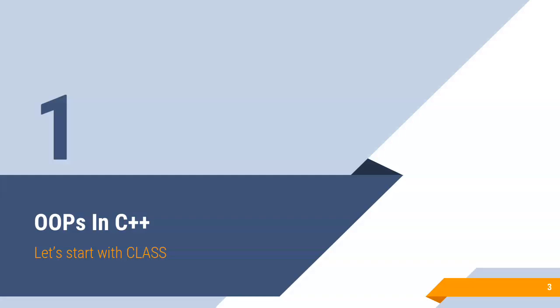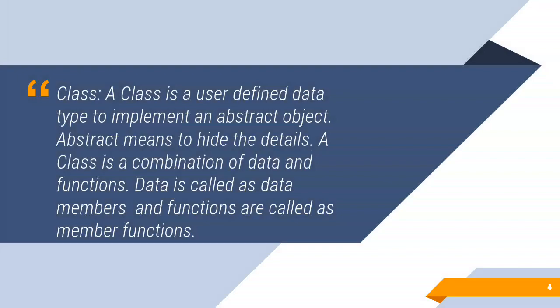Oops in C++. Let's start with class. A class is a user defined data type to implement an abstract object. Abstract object means a special object for which we are dealing with only the properties of interest by hiding some extra details.